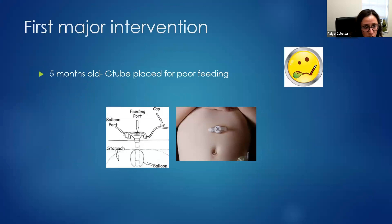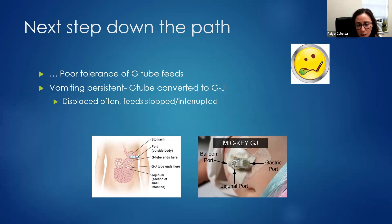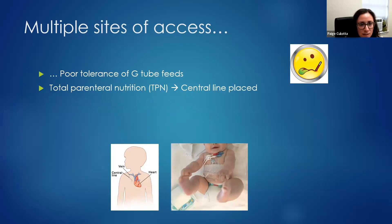At five months old, she has a G-tube placed because mom continues to report poor feeding. With that G-tube, she then has poor tolerance of feeds and persistent vomiting, so the G-tube is converted to a GJ tube. That GJ tube is often displaced, so her feeds are interrupted and she has to go back and forth to the hospital for replacements. Because of all the trouble with this, TPN is started and she gets a central line — now she has multiple points of access and is hospitalized quite frequently.